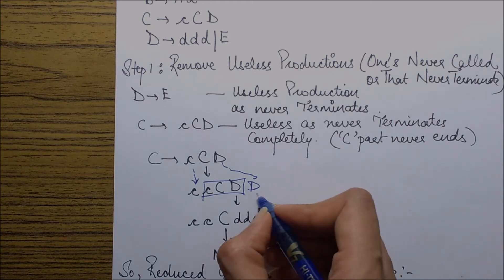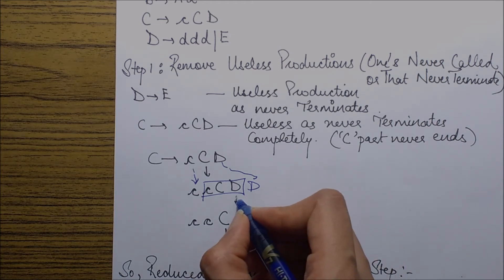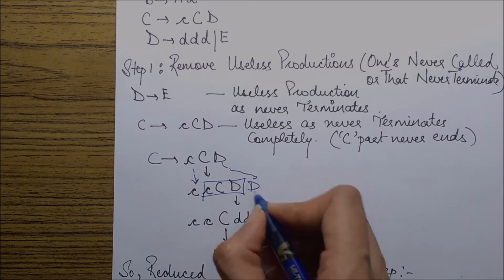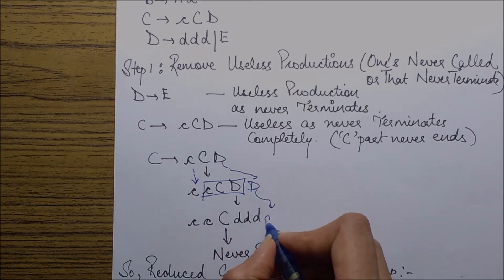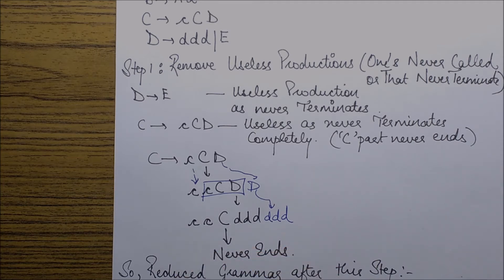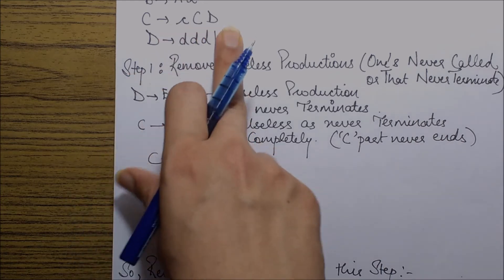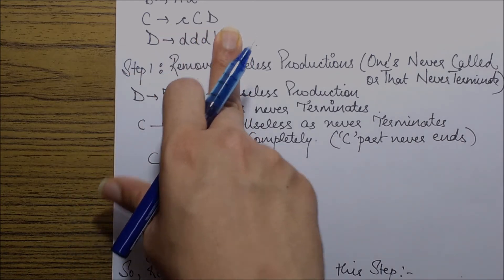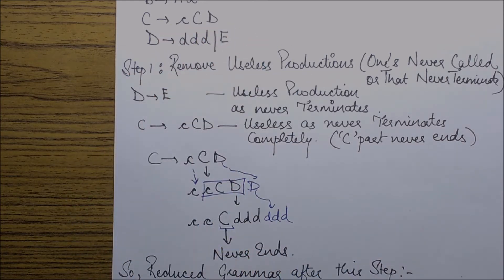And then I can finally substitute this capital D as D D D D, this again with D D D. So what I can notice over here is that this C can again be substituted with the help of the same production C capital C D, but this won't terminate.